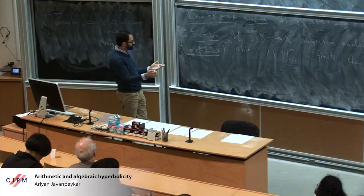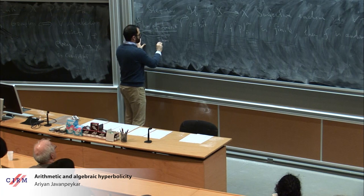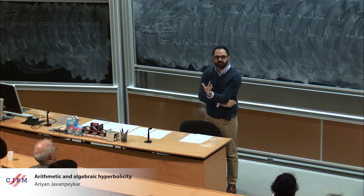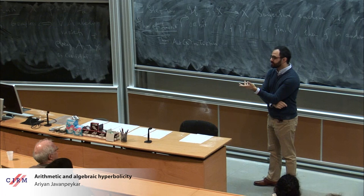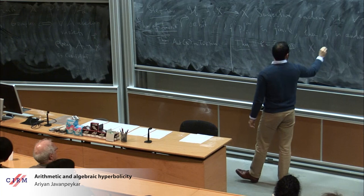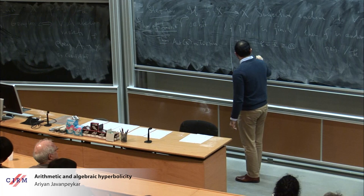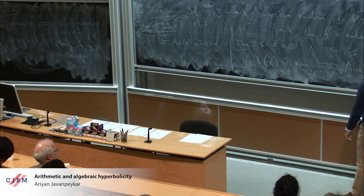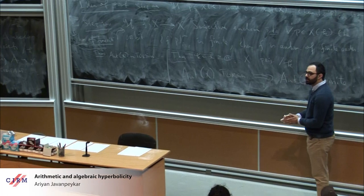The conclusion is that every automorphism is torsion, so the automorphism group of X is a torsion group. The final ingredient is that if you have any projective variety over an algebraically closed field of characteristic zero whose automorphism group is torsion, then this automorphism group is finite. If it's finite then of course it is torsion, and the statement is that the converse is also true.